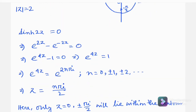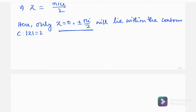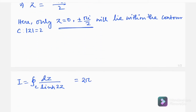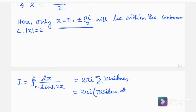According to the residue theorem, the value of the integral of 1/sinh(2z) around C can be written as 2πi times the sum of the residues — that is, 2πi times the residue at πi/2, plus the residue at −πi/2, plus the residue at 0.